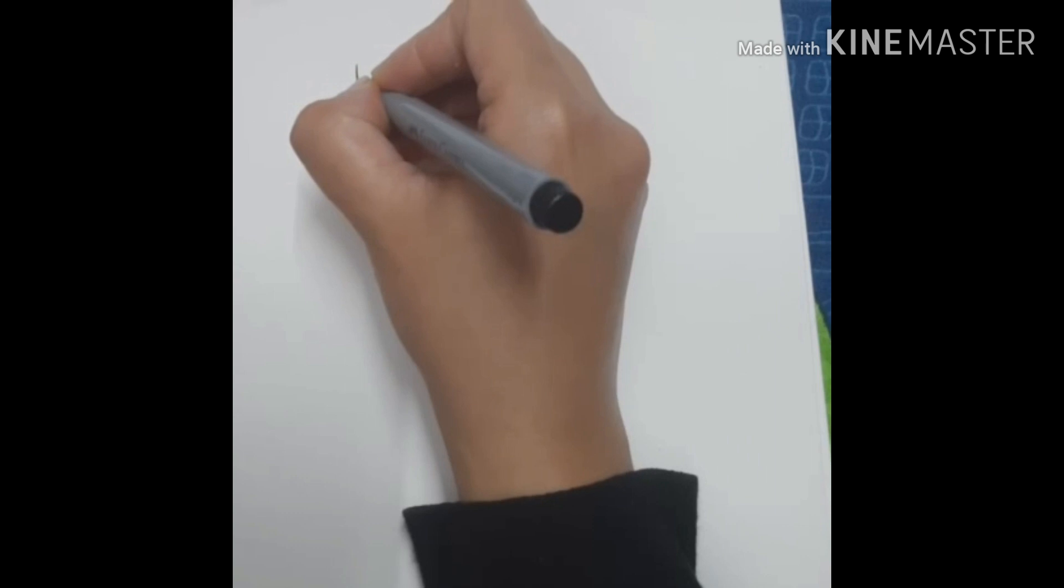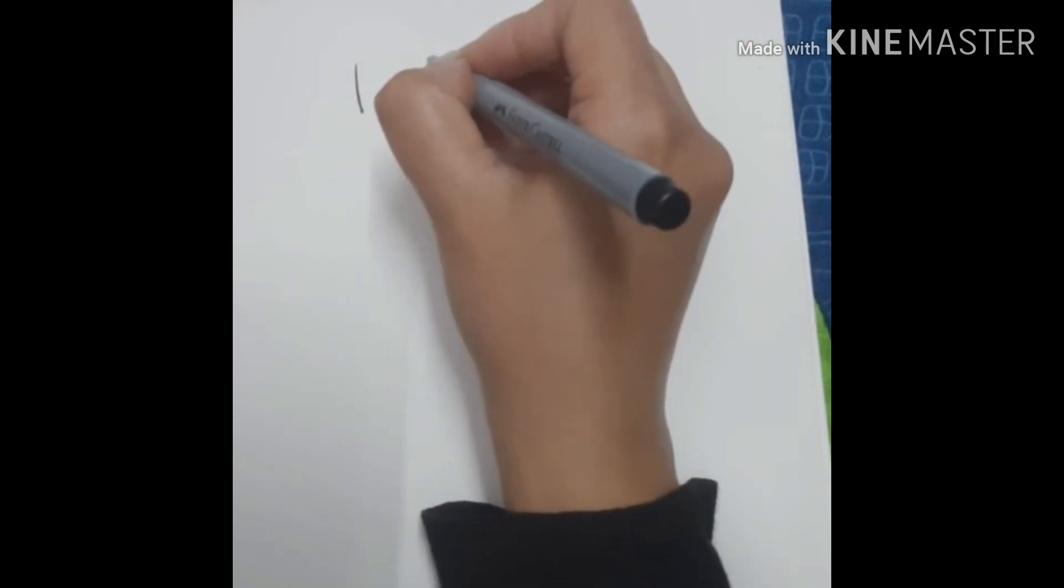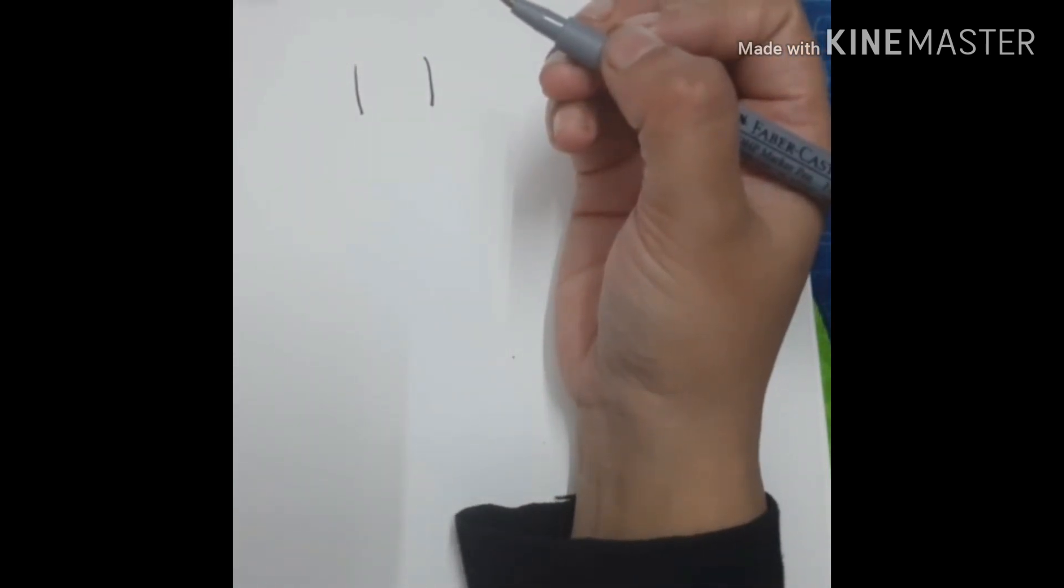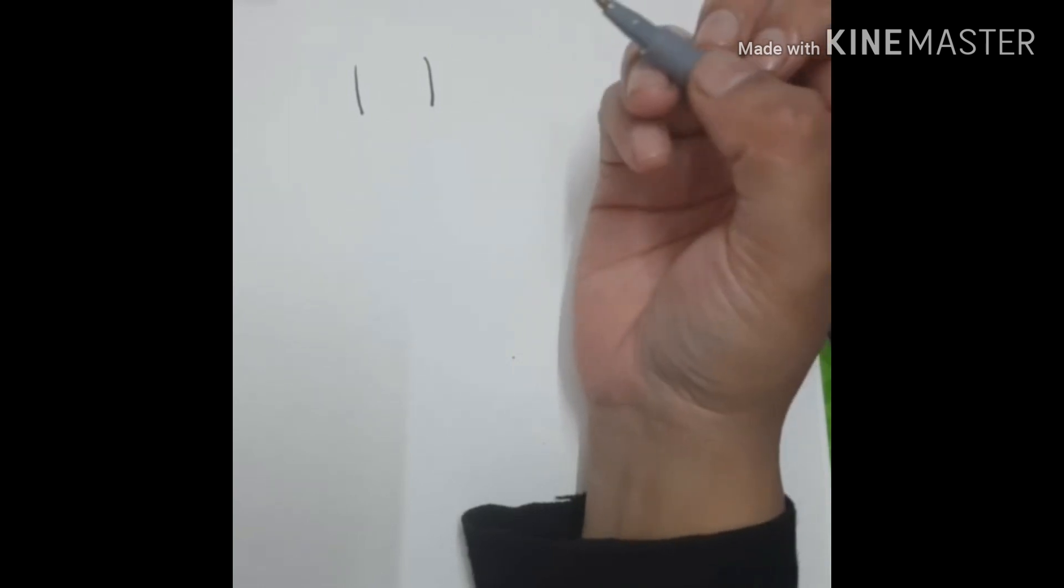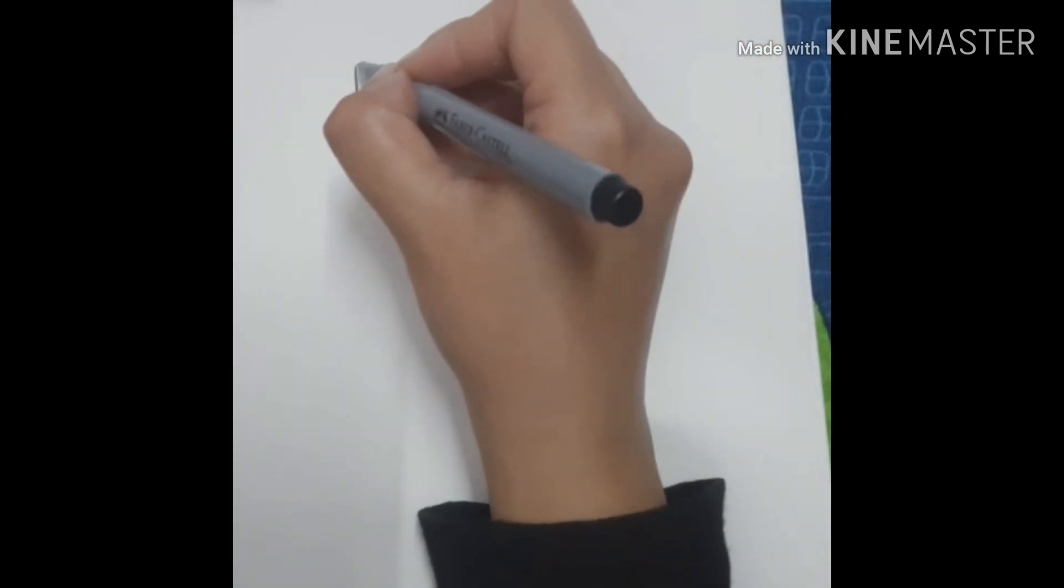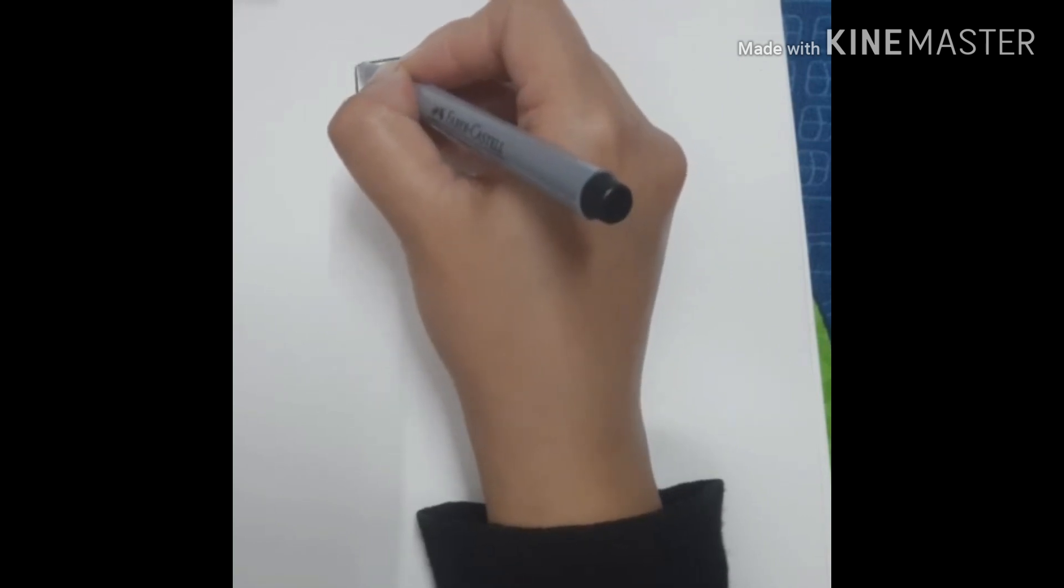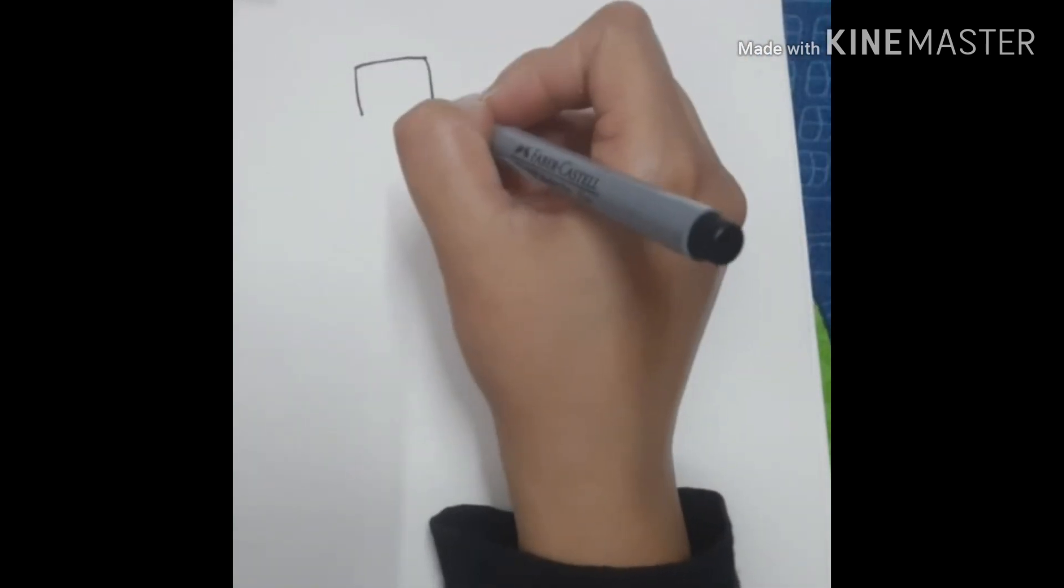So let's get started. First of all, you will need to make a square, but you have to make that square not full - you have to make three sides. Now I have two sides and now I will complete it from three sides. So this is Ganesha's face.